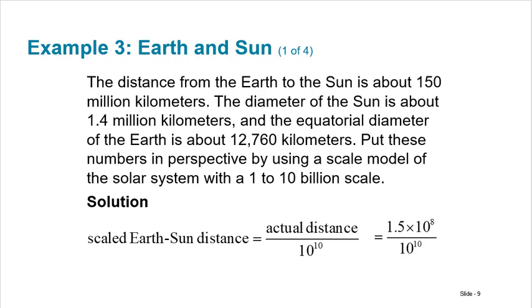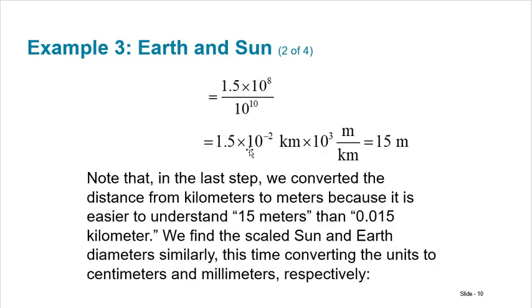So how about the distance from the earth to the sun? It's about 150 million kilometers. Can you really fathom that? I mean we just know it's a long way. The diameter of the sun is about 1.4 million kilometers. And the equatorial diameter of the earth is about 12,760 kilometers. So we can put these numbers in perspective by using a scale model of the solar system with a 1 to 10 billion scale. So the scaled down earth to sun distance, the actual distance divided by 10^10 because that's what 10 billion is. So 1.5×10^8, that's 150 million in scientific notation, divided by 10^10.